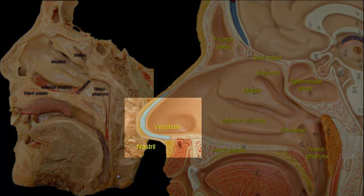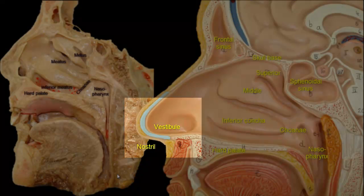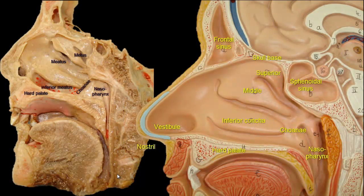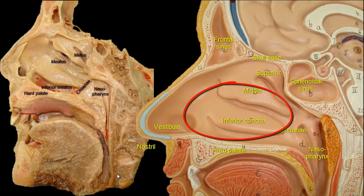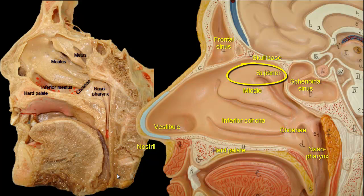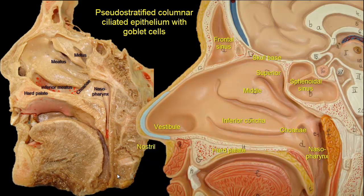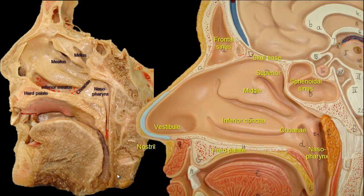Except for the vestibule at the entrance of the nose, which is lined with skin, the remaining part of the nose is lined by mucosa. The inferior two-thirds is called the respiratory area, and the superior one-third is called the olfactory area, which contains the peripheral organ of smell. The mucosa is lined by pseudostratified columnar ciliated epithelium with goblet cells, and has mucus glands that excrete mucus which traps large particles such as dust. This mucus is washed towards the pharynx by cilia and then swallowed. Excessive excretion blocks the nose.